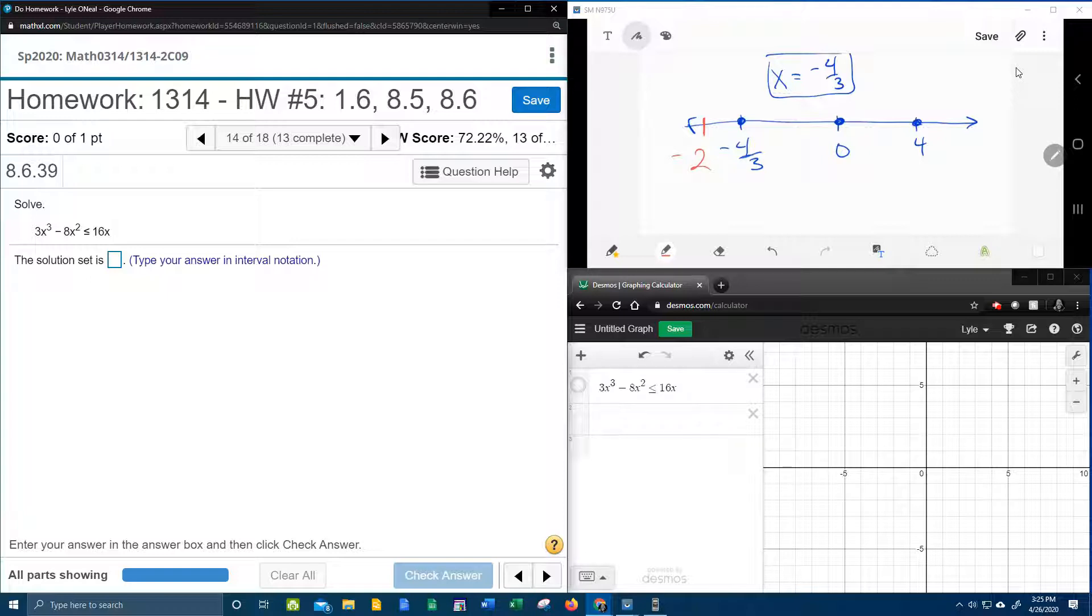And then I need a number that's between negative 4 thirds and 0. Negative 1 would be there. A number between 0 and 4 maybe 2. And then a number bigger than 4. I don't know. 5, 6, 7, 8. Anything bigger than 4. Or let's go 6. Well it doesn't really matter. Whatever you want to pick.